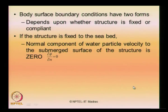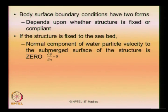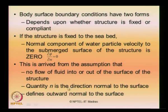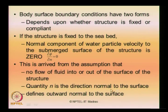The body surface conditions have two forms depending on whether the structure is fixed or compliant. For a structure fixed to the sea bed, as in the case of jacket or gravity wave structures, the normal component of the water particle velocity to the submerged surface is taken as zero — that is, d phi by d n equals zero. This is based on the assumption that no fluid enters or exits through the surface of the structure. The quantity n is the direction normal, otherwise defined as the outward normal to the surface.